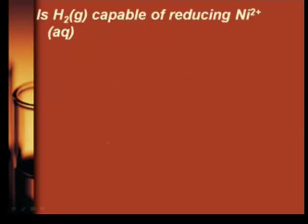Is H2 capable of reducing nickel 2+, so nickel 2 positive, to something lower, so some nickel solid? We're going to look, and this is hydrogen, so here's zero volts. Now do we want to go to Ni or Ni plus 1? That's a good question. Let's look them both up and see what happens.